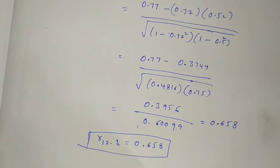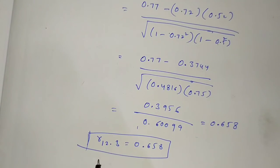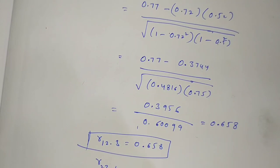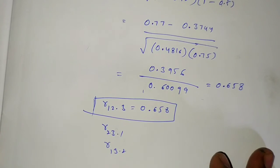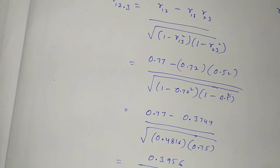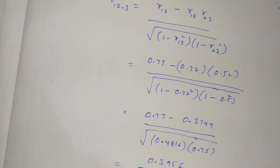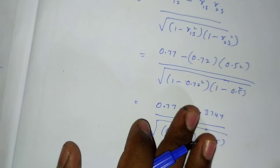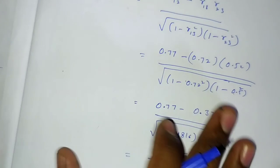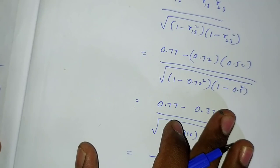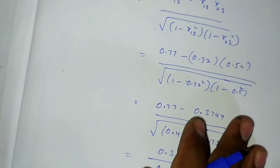So we found the partial correlation coefficient R123. You can also find out R231 and R132 by substituting into their respective formulas. If you like this video, please like and share your thoughts in the comments section. Thank you so much for watching this video.